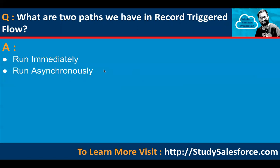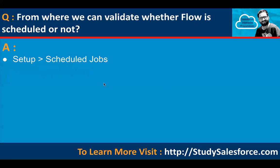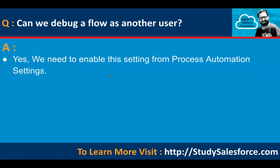What are the two paths in record triggered flow? We have run immediately and run asynchronously. From where can we validate whether a flow is scheduled or not? Go to setup and in quick find, search for scheduled jobs — there you can find whether your flow is scheduled. Can we debug a flow as another user? Yes, you need to enable this setting from process automation settings in quick find under setup. After enabling that setting, you can run your flow as another user.